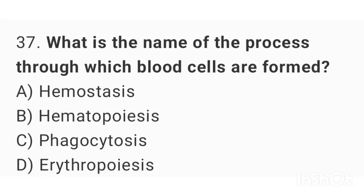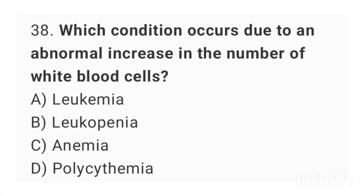Question number 37: What is the name of the process through which blood cells are formed? The right answer is option B: hematopoiesis. Question number 38: Which condition occurs due to an abnormal increase in the number of white blood cells? The right answer is option A: leukemia.